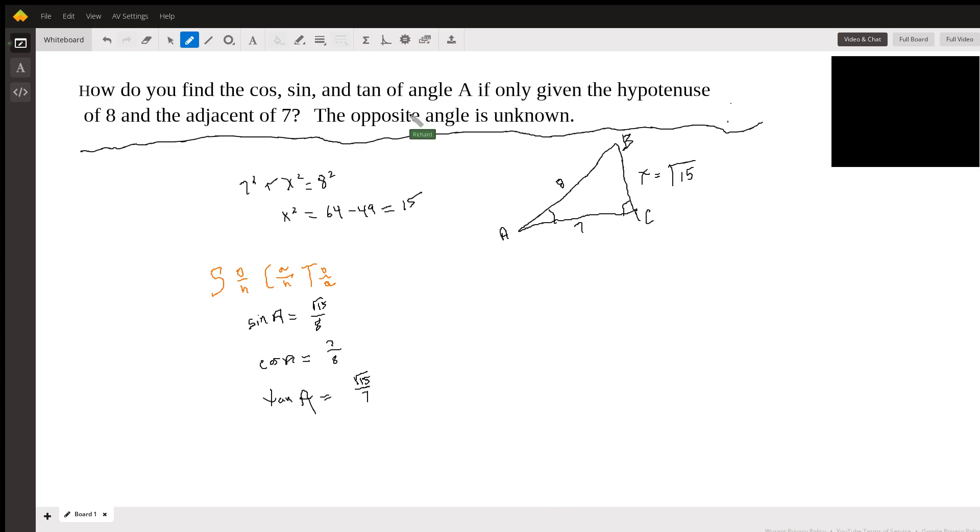We're not really asked to find this angle. But we'd have to take the inverse sine or cosine or tangent of A to find out how big A is. And then we could subtract that from 90 degrees to find the measure of angle B.